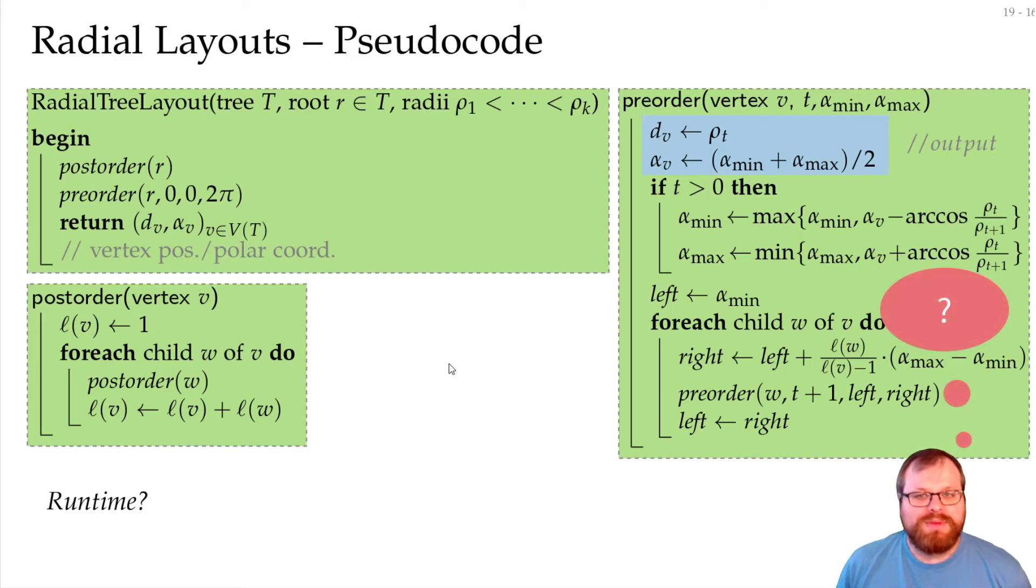What is the runtime of this algorithm? Well, what do we do? We have a post-order traversal here. We know in the post-order traversal we can do it in linear time. We have a pre-order traversal here, and everything we do here takes just constant time. These are just some basic computations. And this here, again, just basic computations. It's just a pre-order with some additional constant steps in every step. So this also takes linear time. And that's it. So the whole thing is just linear.